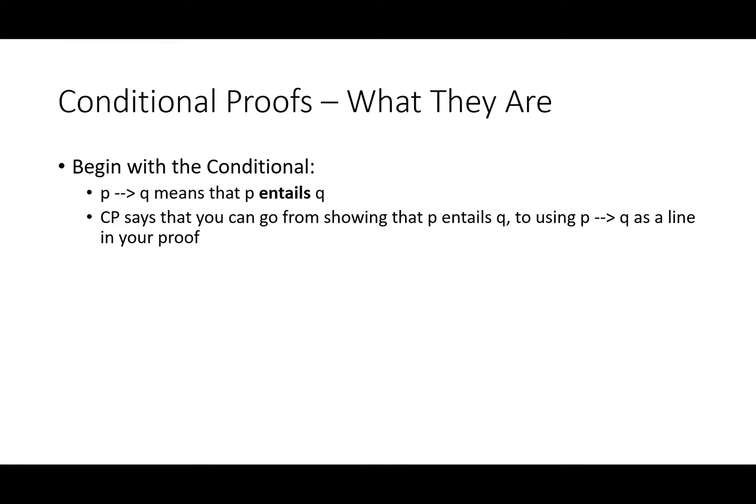Conditional proof says that you can go from showing that P entails Q, no matter what your path there, to using if P then Q as a line in your proof. Conditional proof allows you to introduce an arrow from P to Q where there was none before, so long as the relevant logical connections are there.